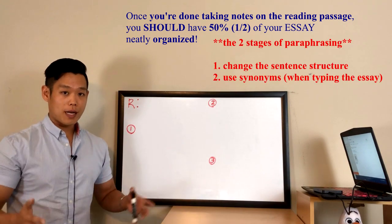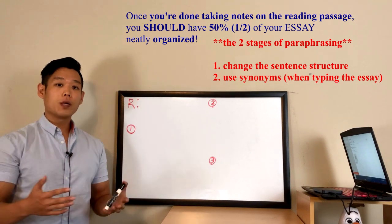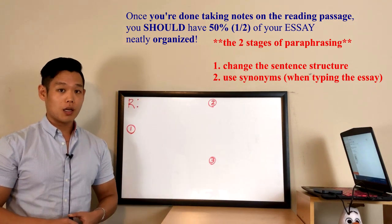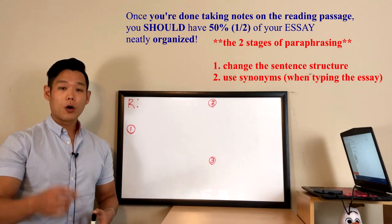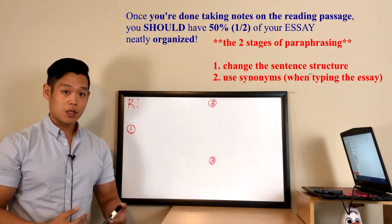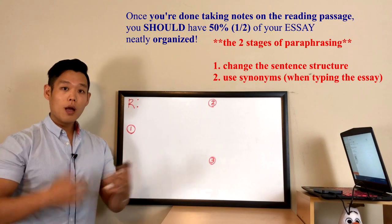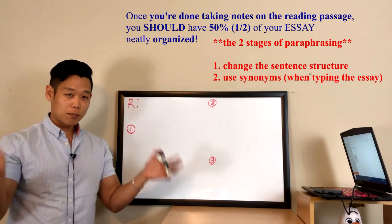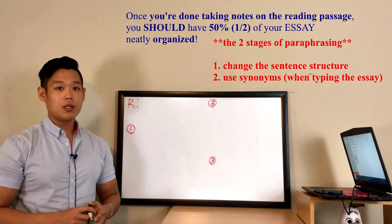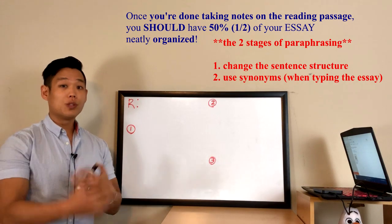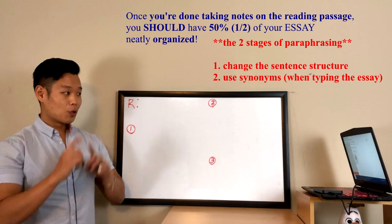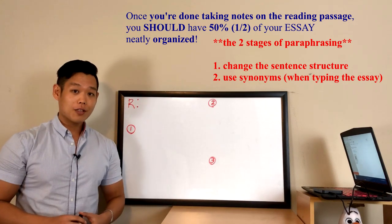When taking notes on the reading passage, focus on changing the sentence structure first, then worry about synonyms when actually typing your essay. There are two stages in the paraphrasing process: the first stage is to mix up, combine, or split up the sentences in the reading passage; the second stage is to use synonyms while typing your essay. Now let's go to the laptop and look at the reading passage.